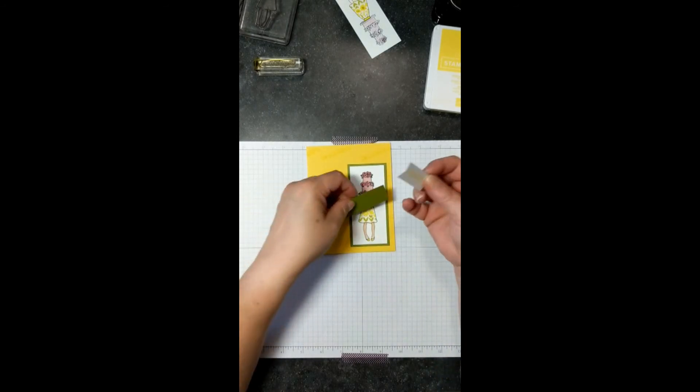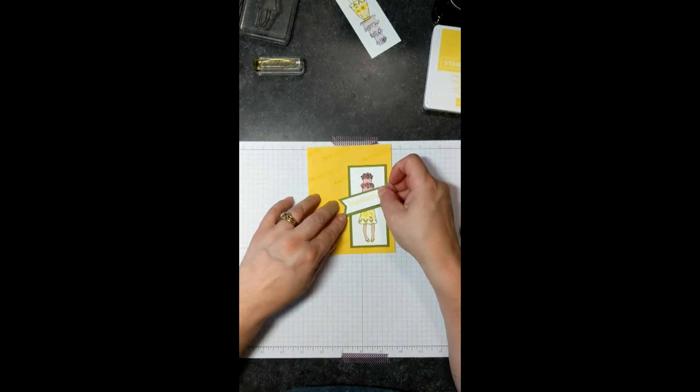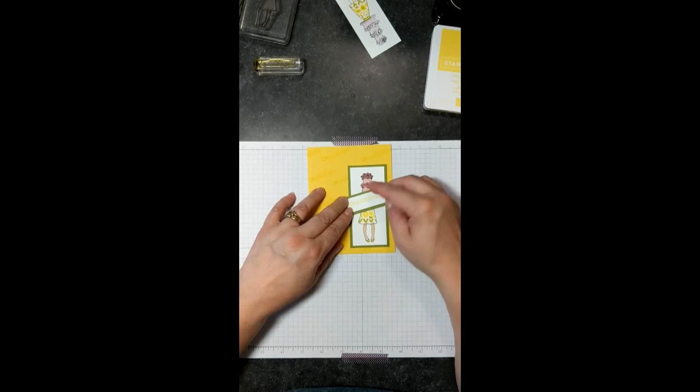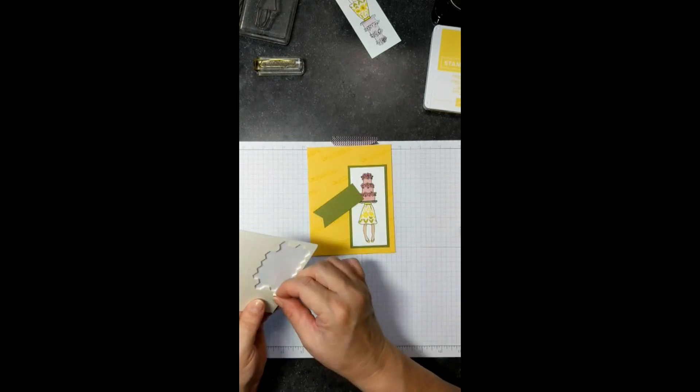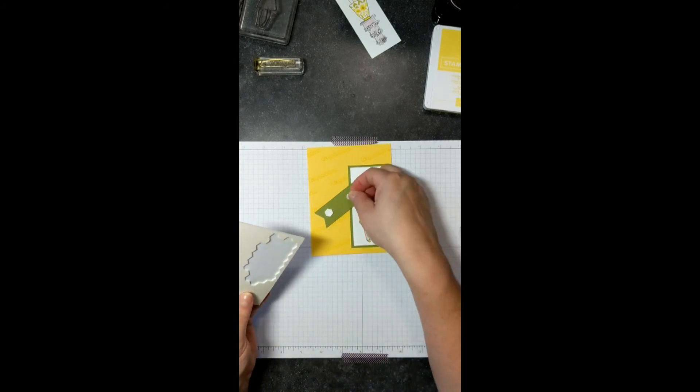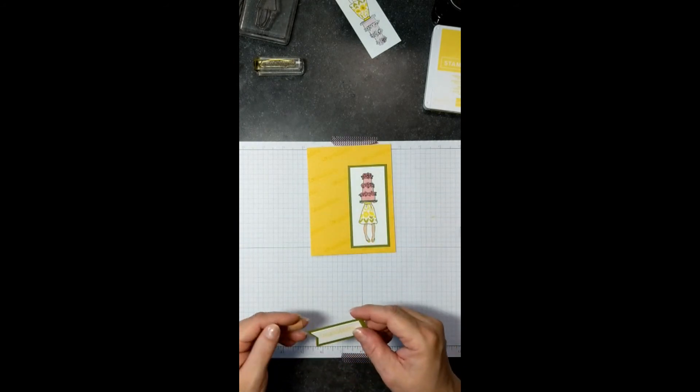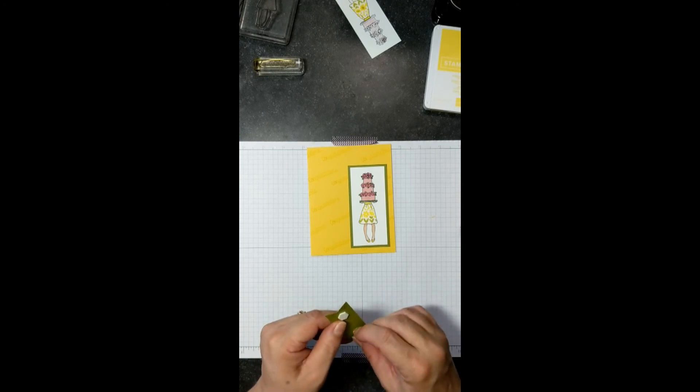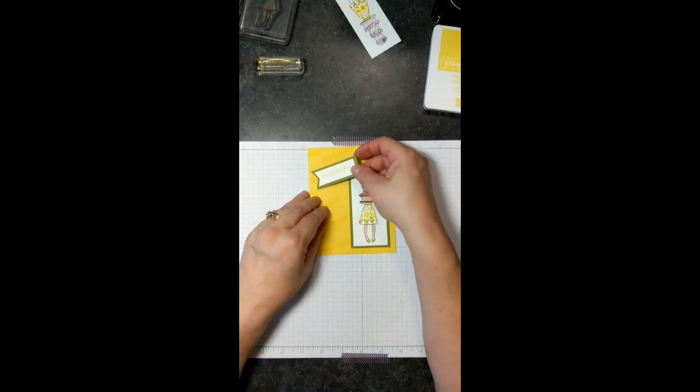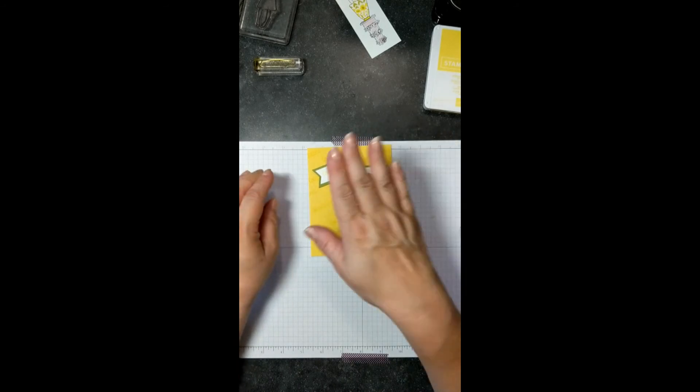And go ahead and just line that up on there. And there's our little pennant. And then a couple of Stampin' Dimensionals to pop that off the page. Just a little tiny bit. And we're going to line it up about right. Like that.